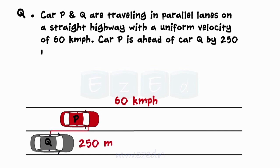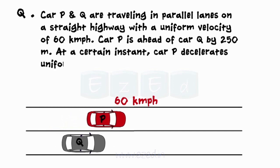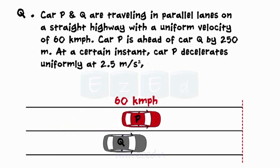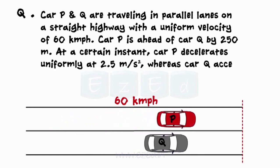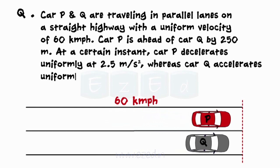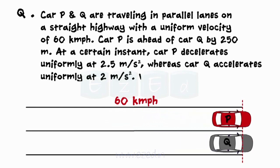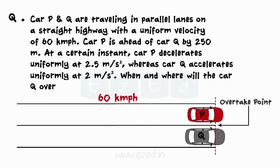Car P is ahead of car Q by 250 meters. At a certain instant, car P decelerates uniformly at 2.5 meters per second squared, whereas car Q accelerates uniformly at 2 meters per second squared. When and where will car Q overtake car P?